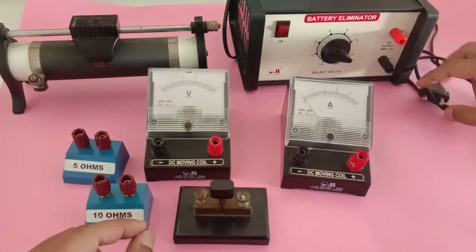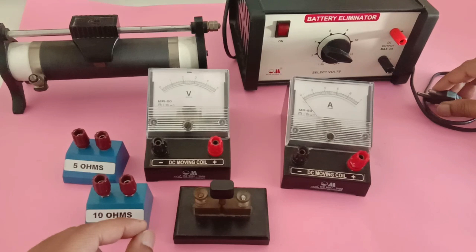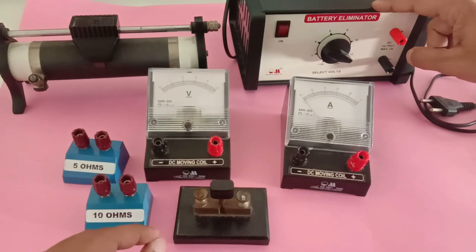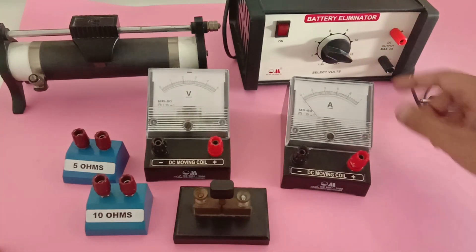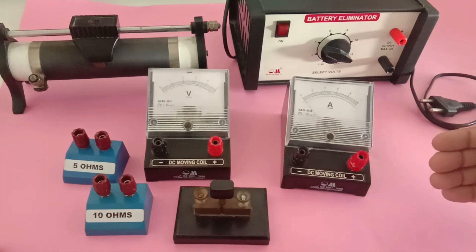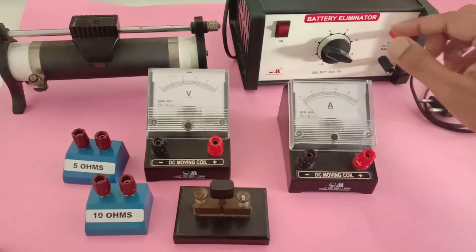This we are supposed to connect to our AC mains. The alternating power will be converted into DC power and we can check Ohm's law with the DC setup. We can also apply Ohm's law to AC circuits, but here we are checking the voltage and current relationship with DC power supply.